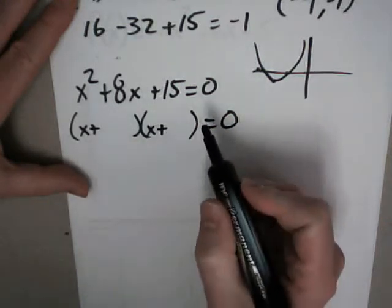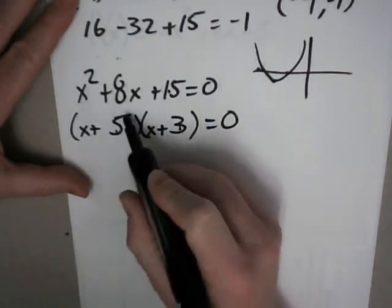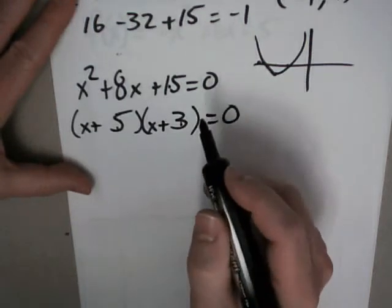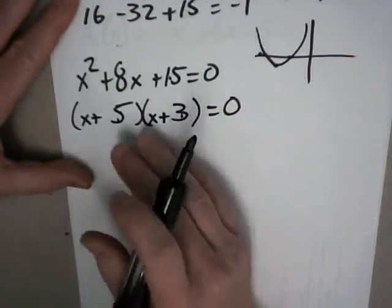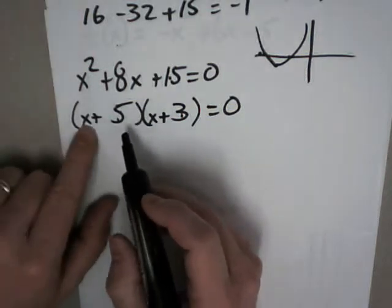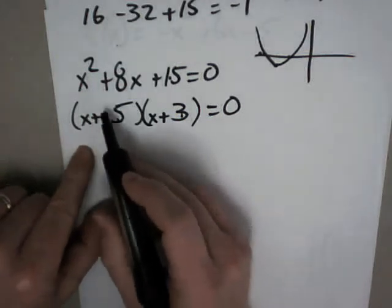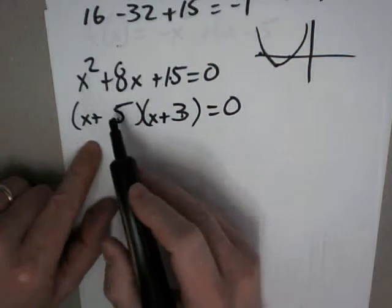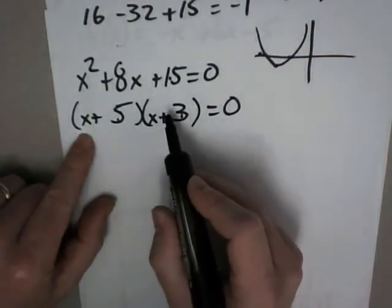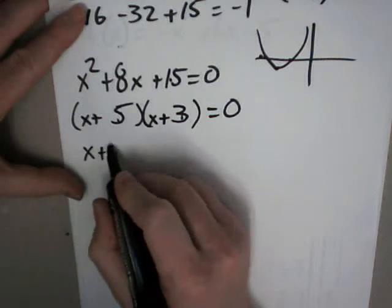So these are both positives. Now I think if I use 5 and 3, 5 times 3 is 15, and 3x and 5x would give you 8x. So if you multiply this back out, you get what you started with. The 0 product property says that anything times 0 is 0.